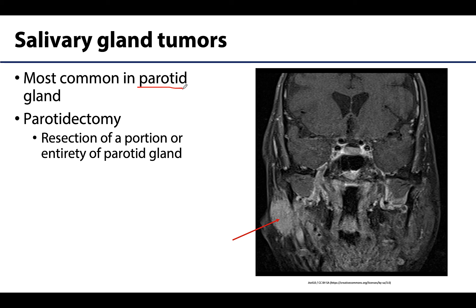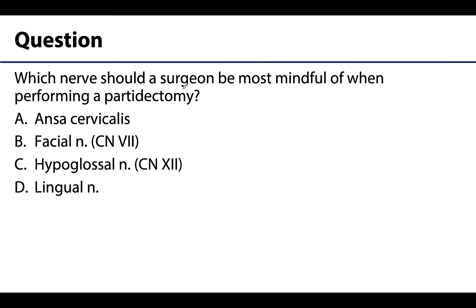So if we do that, let's take a minute and think about what we know about the parotid gland and consider the anatomic relationships that would be important whenever surgery involving the parotid gland is necessary. Which nerve should a surgeon be most mindful of when performing a parotidectomy — that is, the removal of portions of the parotid gland? Is it A, the ansa cervicalis; B, the facial nerve or cranial nerve 7; C, the hypoglossal nerve, cranial nerve 12; or D, the lingual nerve?